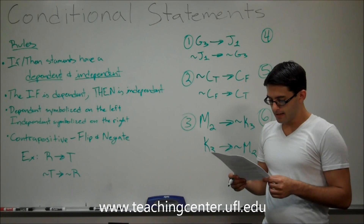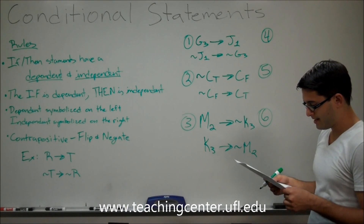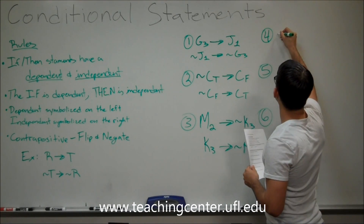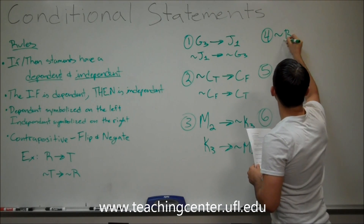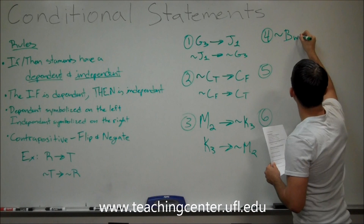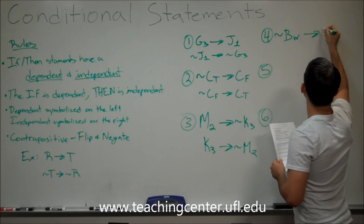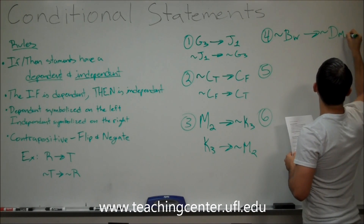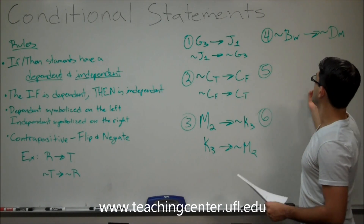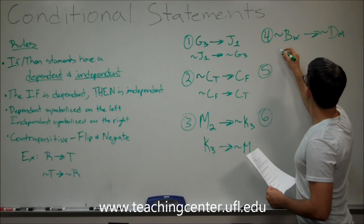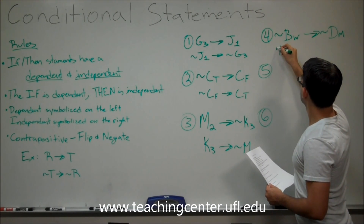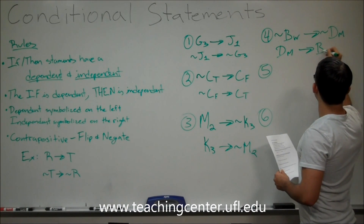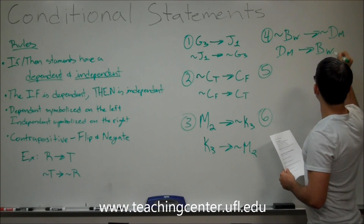Number four: if Brian is not scheduled for Wednesday, then Daisy is not scheduled for Monday. So not-B-Wednesday on the left, not-D-Monday on the right. Contrapositive — flip and negate: if Daisy is scheduled for Monday, then Brian is scheduled for Wednesday.